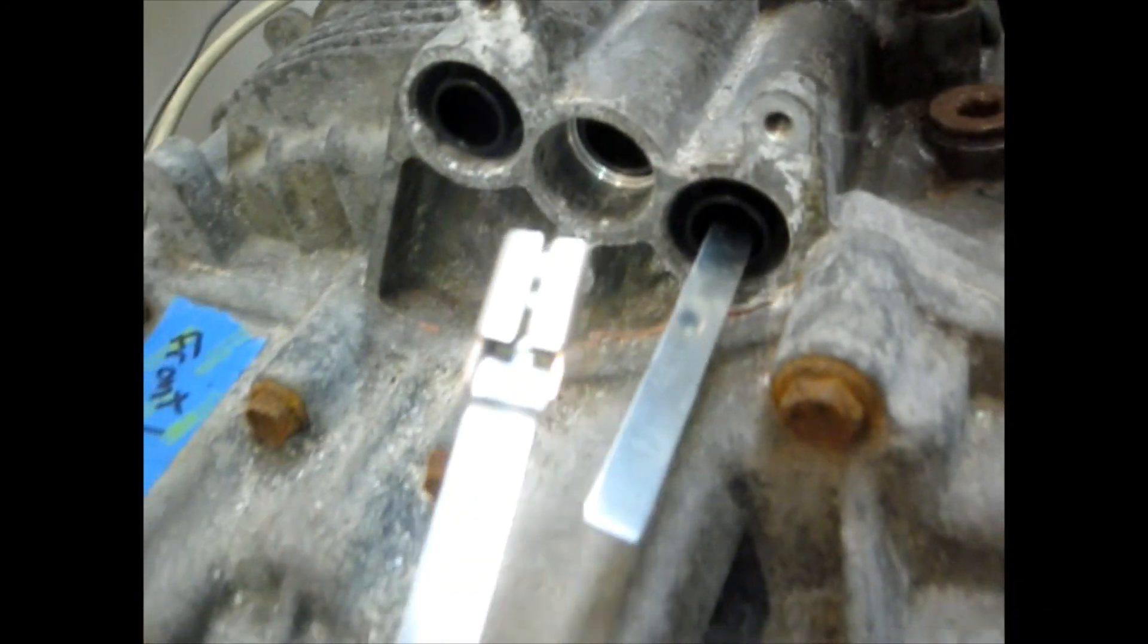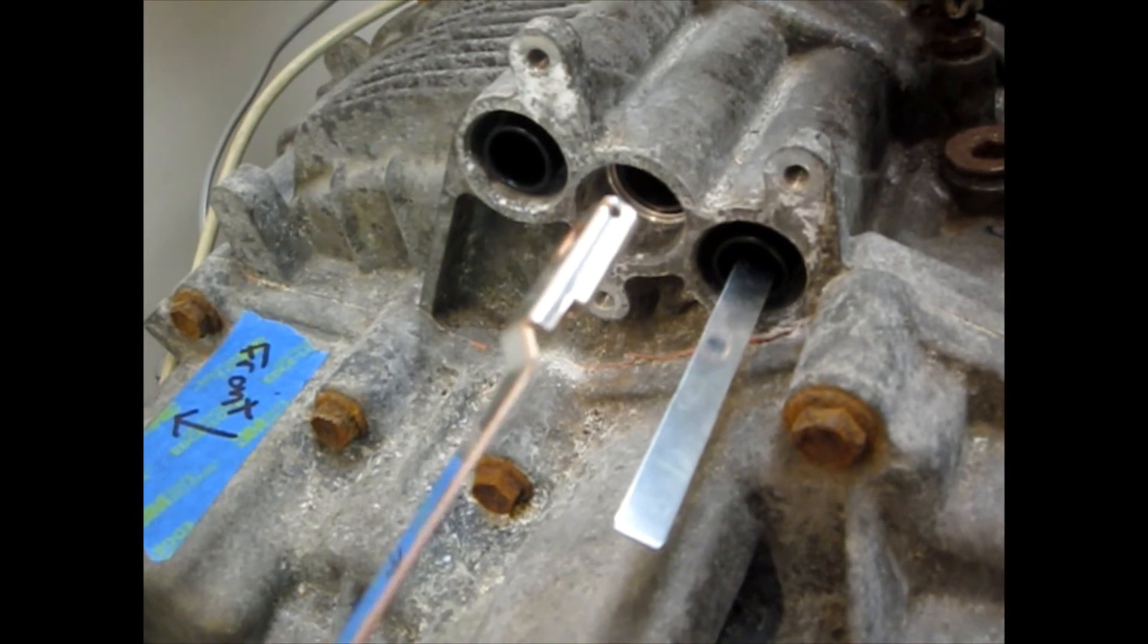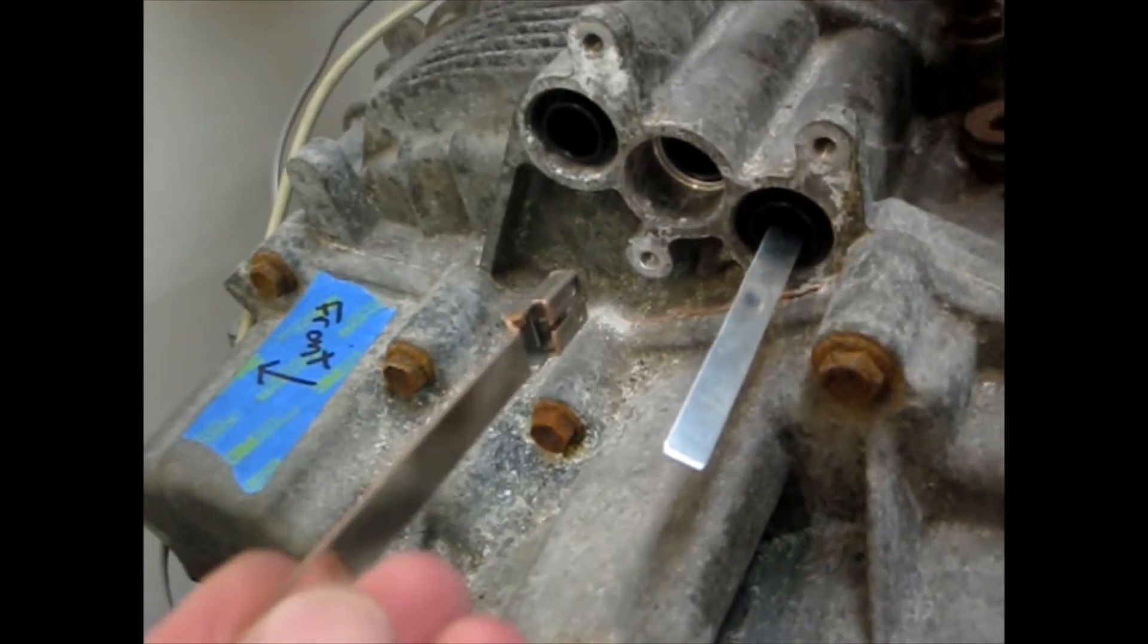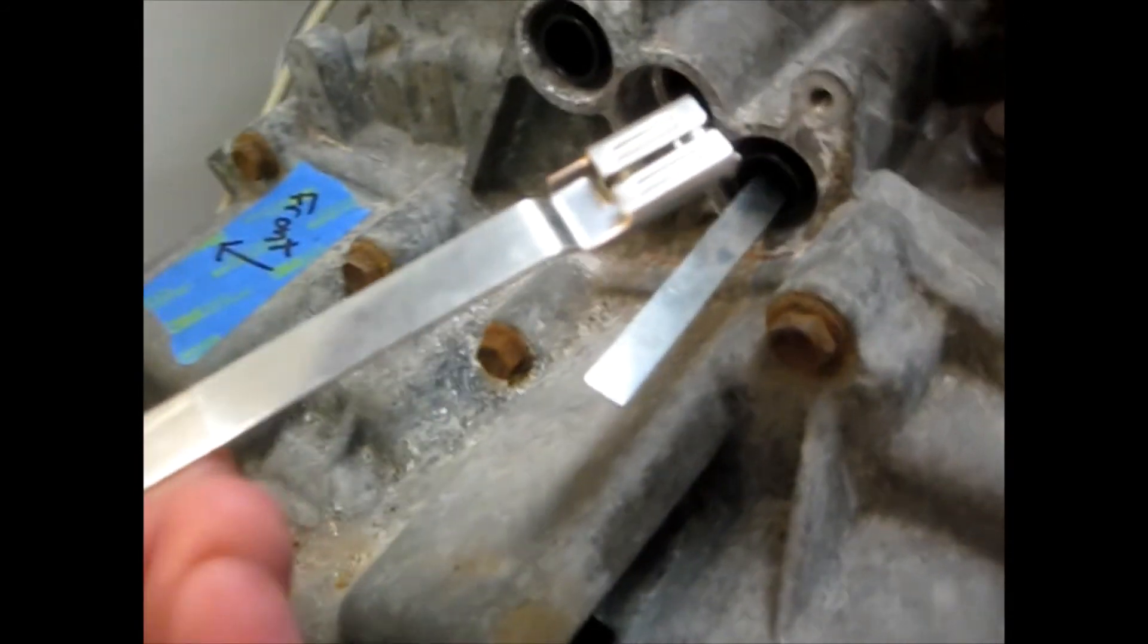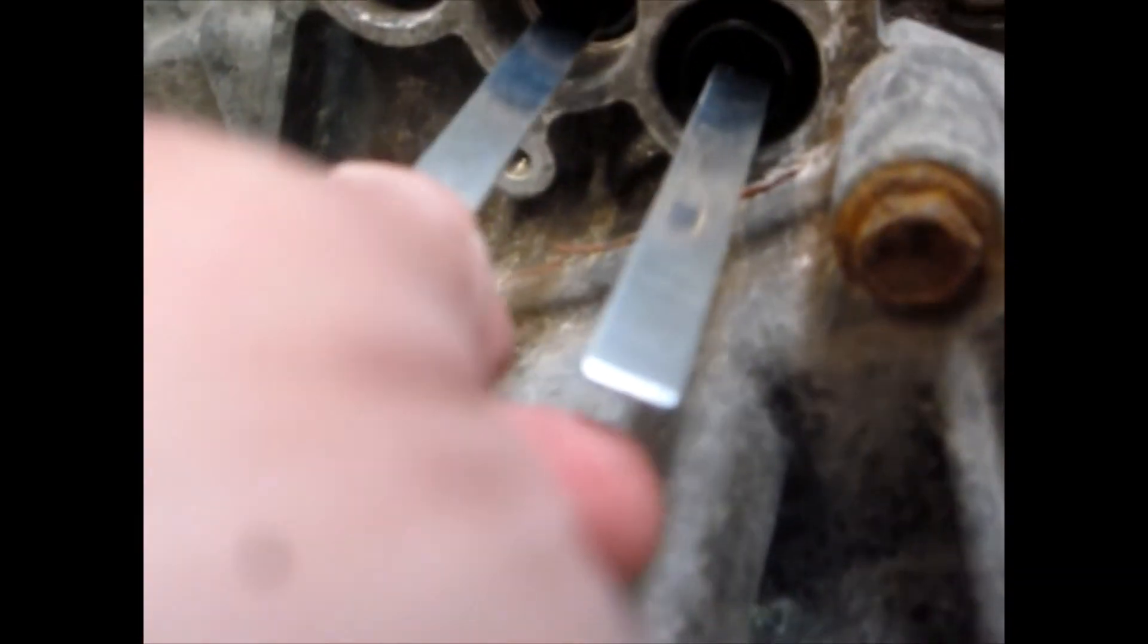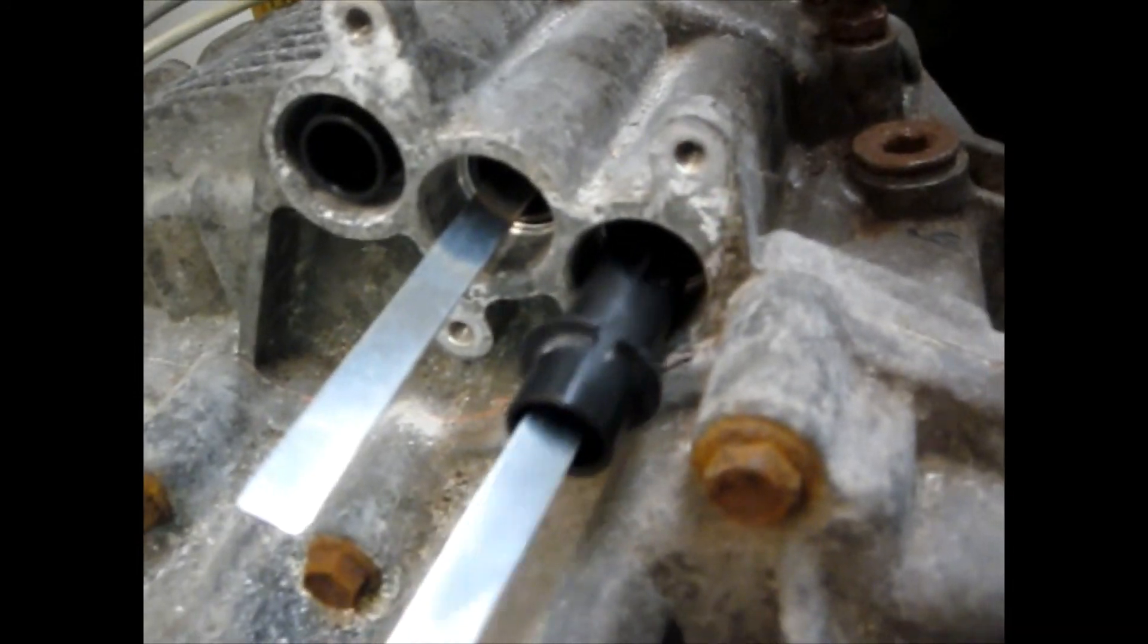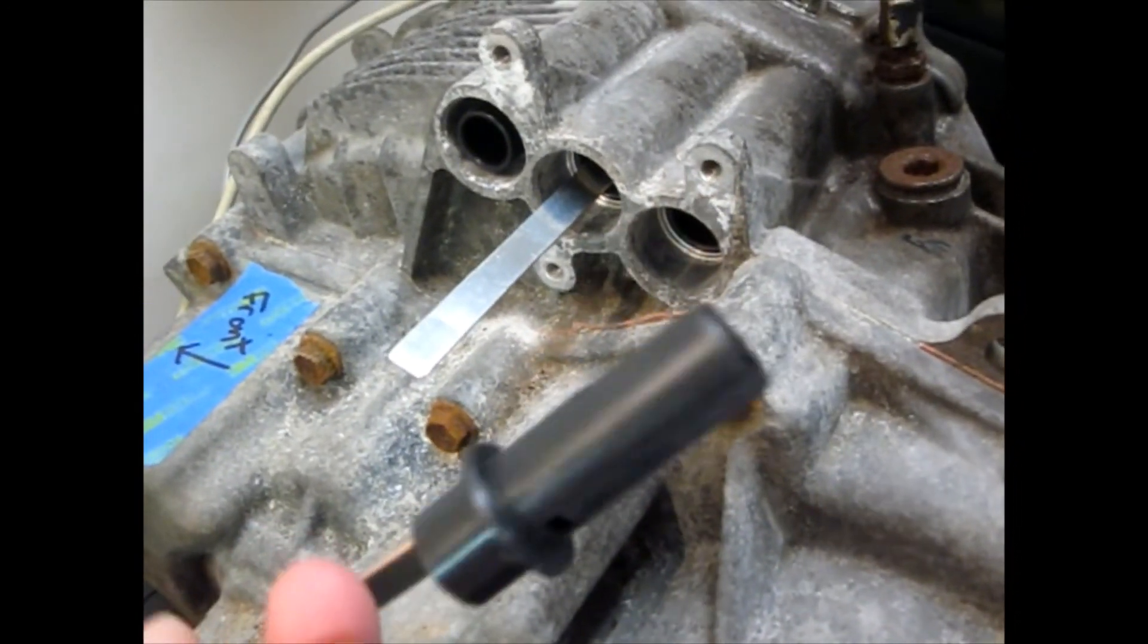And then, here's what the blade looks like. It's literally just a female terminal. Big flat thing. I don't know, I suppose six inches long. And then it just slides down in there, and connects to the male terminal down in there, the male blade. And then here's the whole assembly put together.